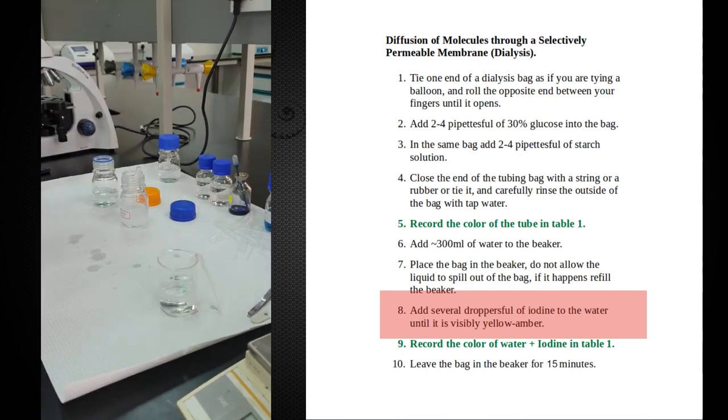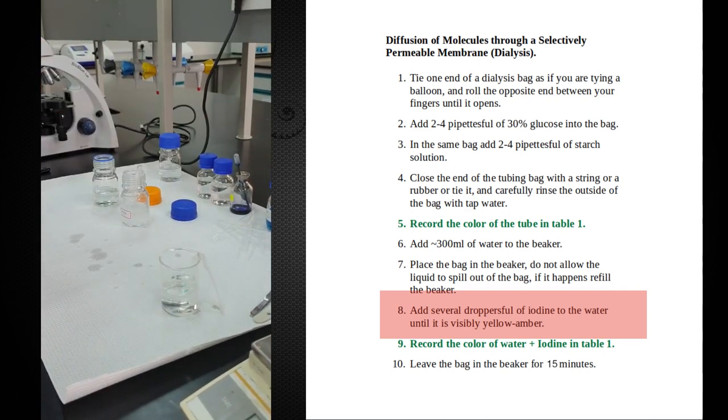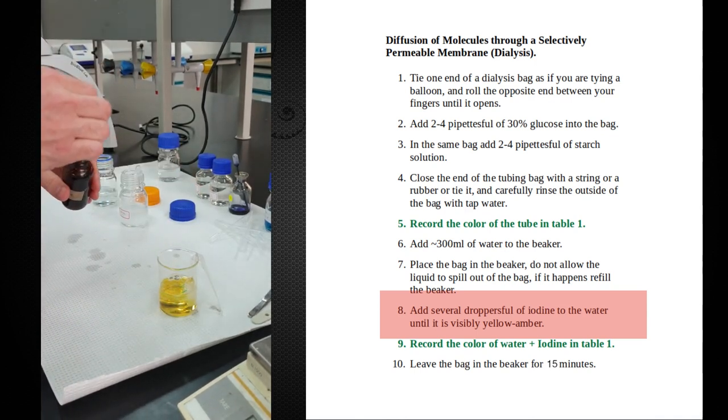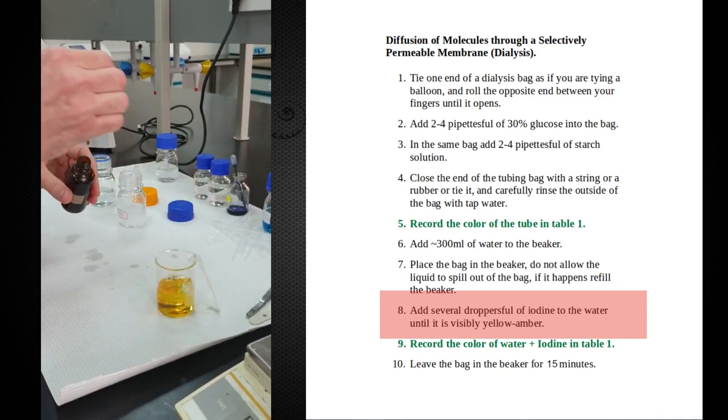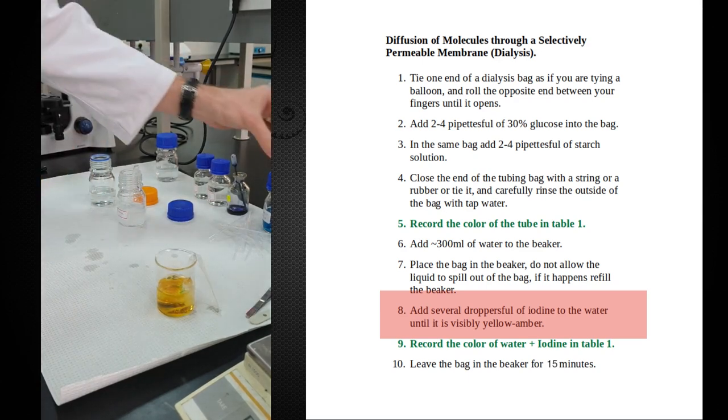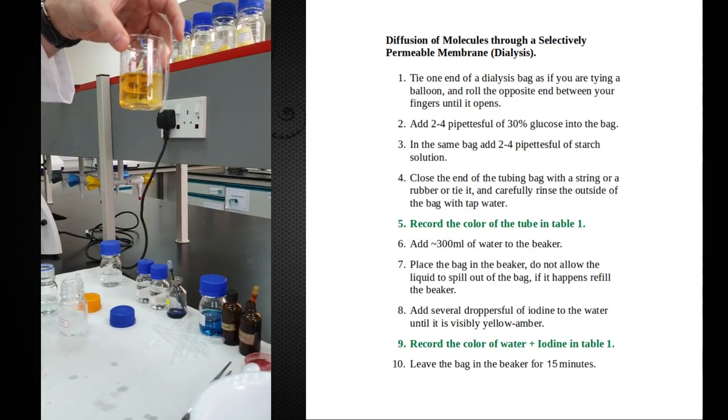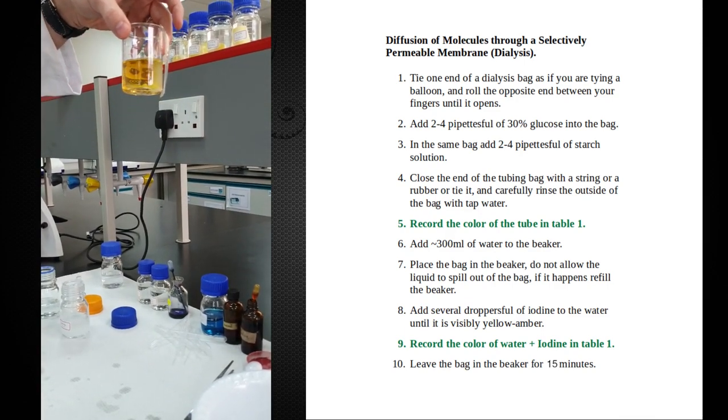And we're going to add some iodine to this. The reason we're adding iodine is because we want to be able to test for the presence of starch. Put in a decent amount of iodine. Don't just put in two or three drops. Make sure that the water looks nice and yellow. Once you have it looking like this, you can set it aside for about 10-15 minutes and we'll see the results afterwards.